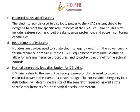C. Electrical Panel Specifications: The electrical panels used to distribute power to the HVAC system should be designed to meet the specific requirements of the HVAC equipment. This may include features such as circuit breakers, surge protection, and power monitoring capabilities. D. Requirement of Isolators: Isolators are devices used to isolate electrical equipment from the power supply for maintenance or repair purposes. HVAC equipment may require isolators to allow for safe maintenance procedures and to protect personnel from electrical hazards.